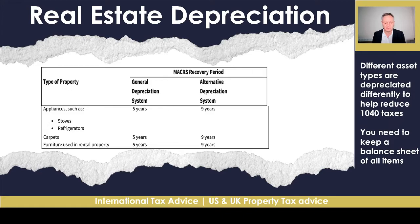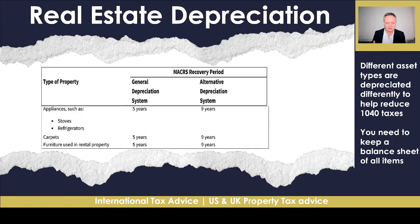One important thing to note is that you may get even more depreciation against your 1040 taxes because items inside the property can be depreciated more quickly. For instance, stoves and refrigerators — white goods — and mechanics that can potentially be moved or are integrated will be depreciated over nine years, not 30. So you're accelerating that depreciation. Carpets are also depreciated over nine years.